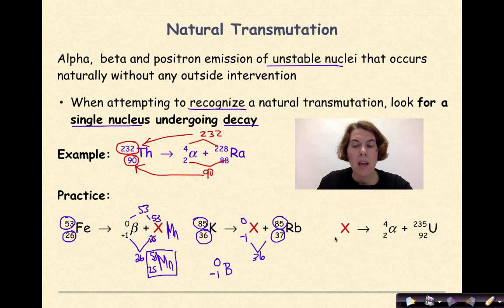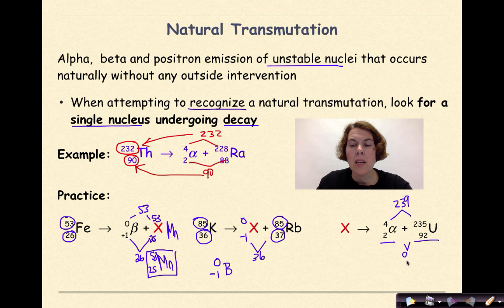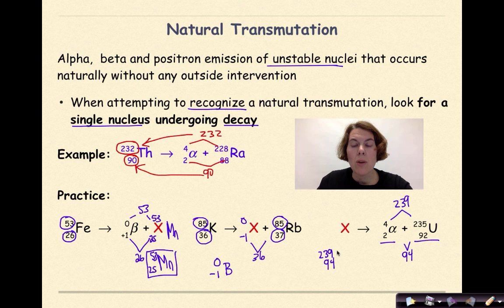The last practice problem: find the initial element that undergoes decay to form an alpha particle and uranium-235. Adding mass numbers: 235 + 4 = 239. Adding atomic numbers: 92 + 2 = 94. So the initial element must be 239-94, which is plutonium.